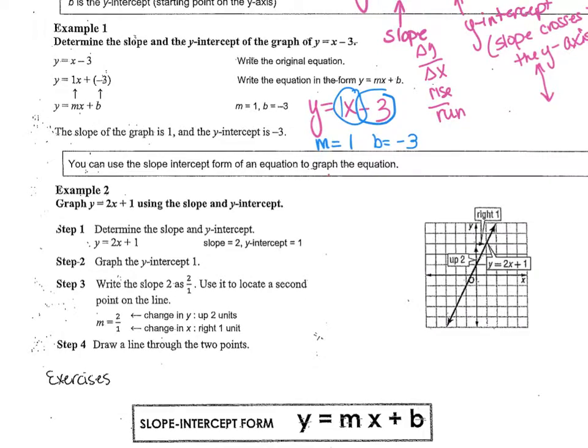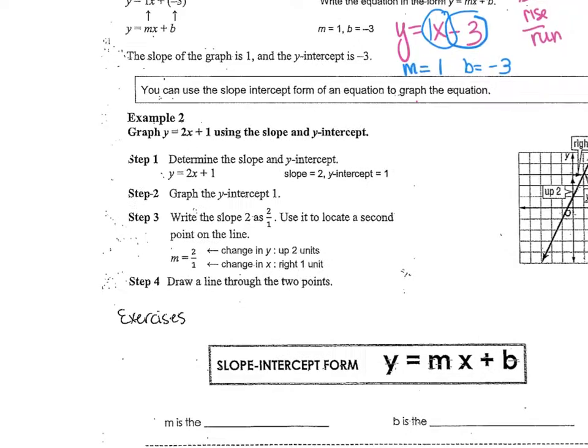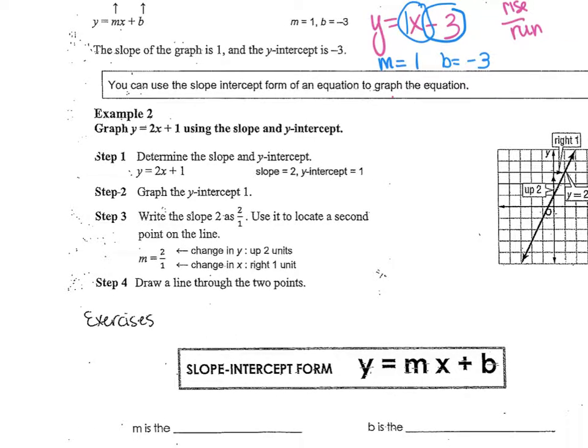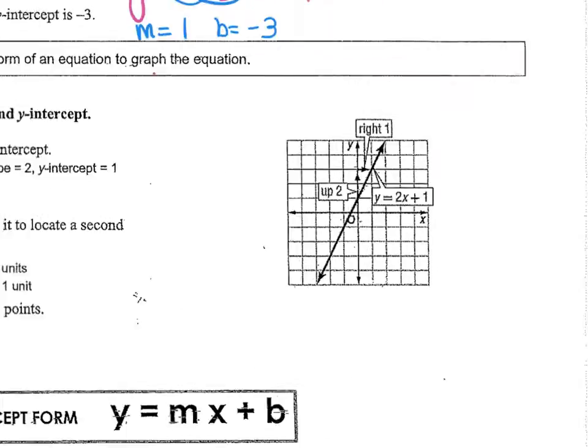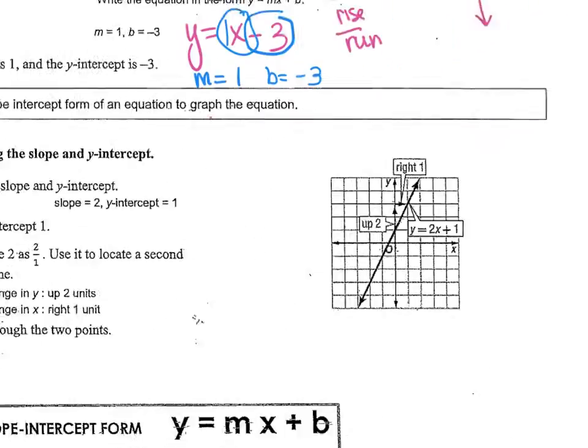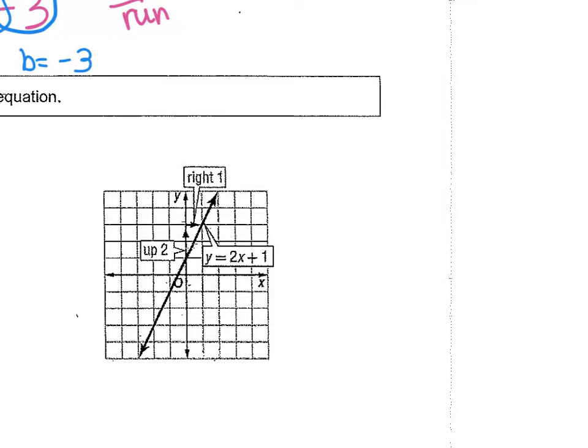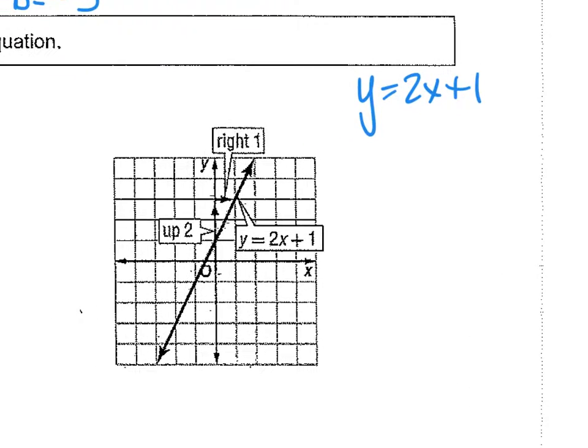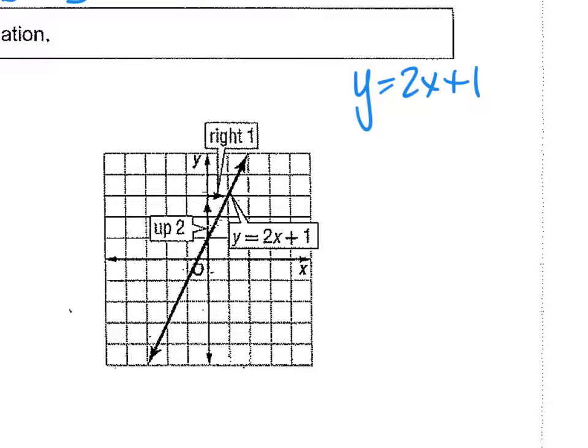So then example 2, if we've got a graph. If they give us an equation and we want to graph that equation on the coordinate plane, they gave us y equals 2x plus 1. If you're given a blank graph, your starting point is that y-intercept.